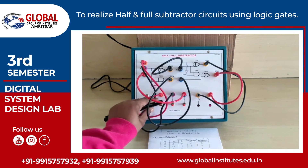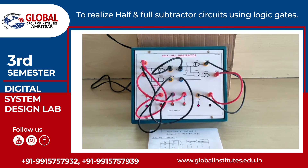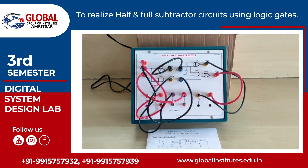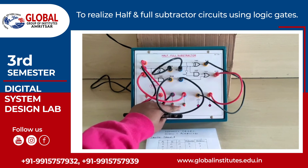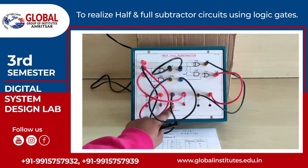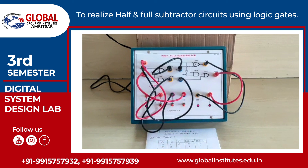Next, change the position: A is 1, B is 0, and C is 0. The difference is 1 and borrow is 0. Next condition: A is 1, B is 0, and C is 1. In this condition, the difference is 0 and borrow is 0. Next: A is 1, B is 1, and C is 0 — both outputs are low. Finally, A is 1, B is 1, and C is 1. The difference will be 1 and borrow will be 1.